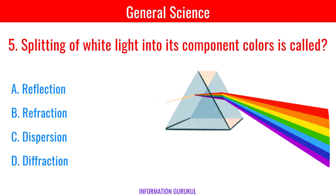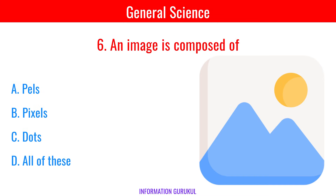Splitting of white light into its component colors is called Dispersion. An image is composed of Pixels.